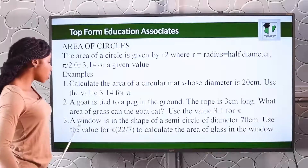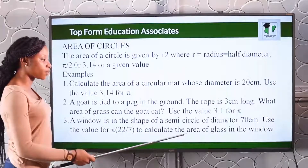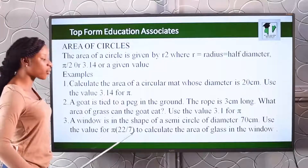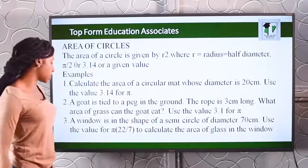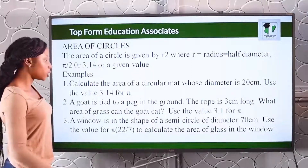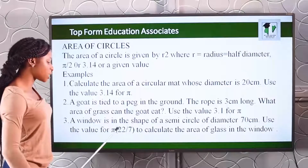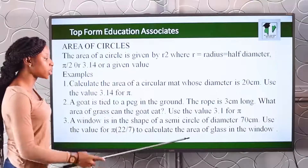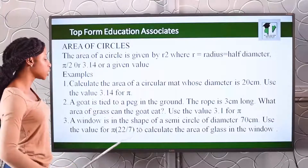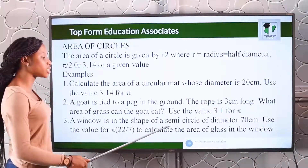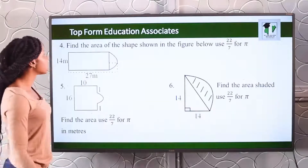Number three: a window is in the shape of a semi-circle with a diameter of 70 centimeters. Look for the area of the glass in the window using the value of pi as 22 over 7. Take note — the window is in the shape of a semi-circle with a diameter of 70 centimeters.